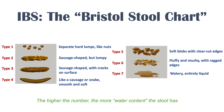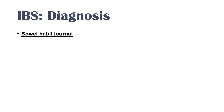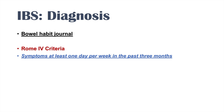The diagnosis of IBS is based on history. We can have a patient track their bowel movements with a bowel habit journal, recording frequency, consistency of stool, and associated abdominal pain. We then use the Rome 4 criteria — a set of criteria based on the history of symptoms. Symptoms have to occur at least one day per week in the past three months.